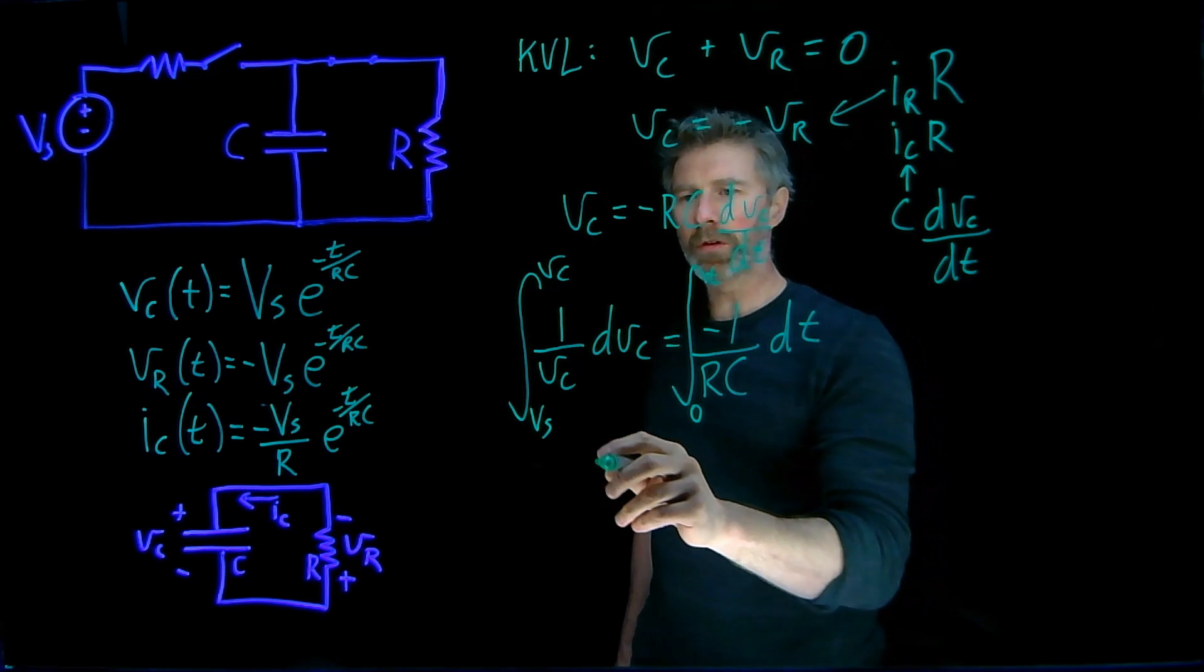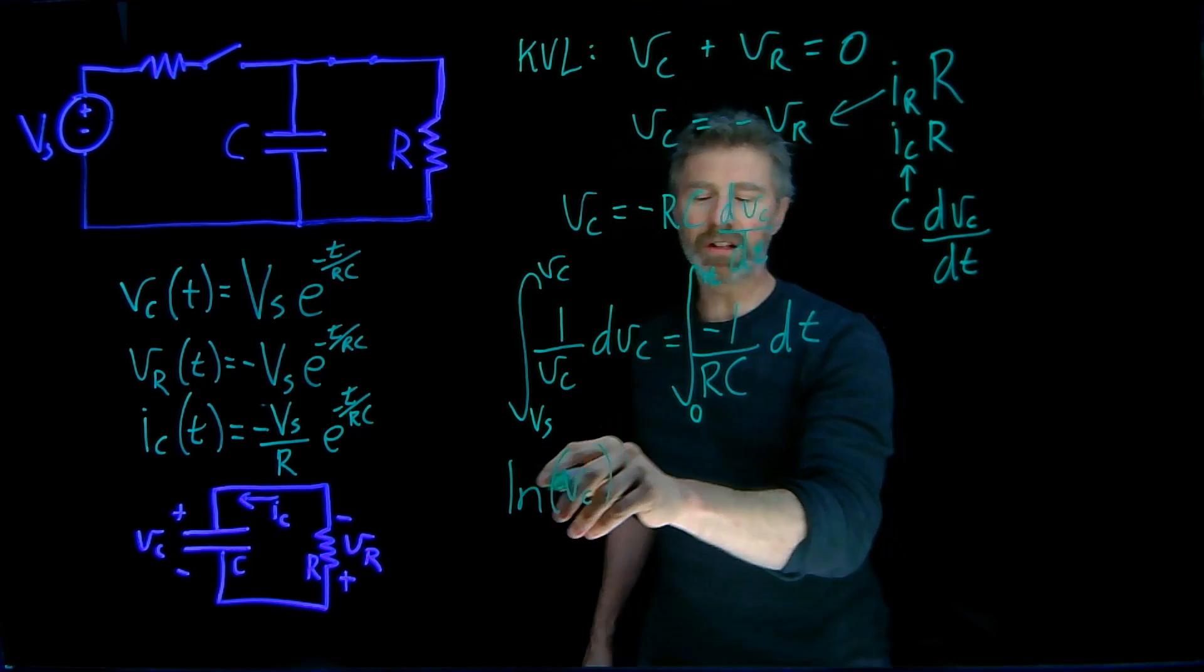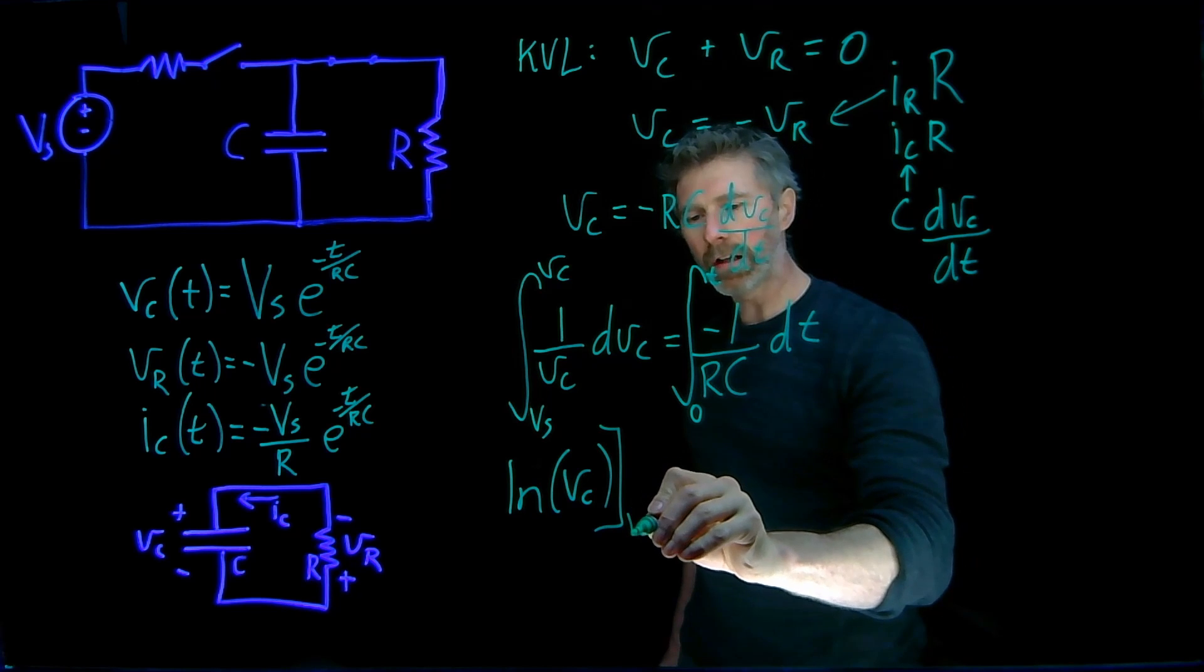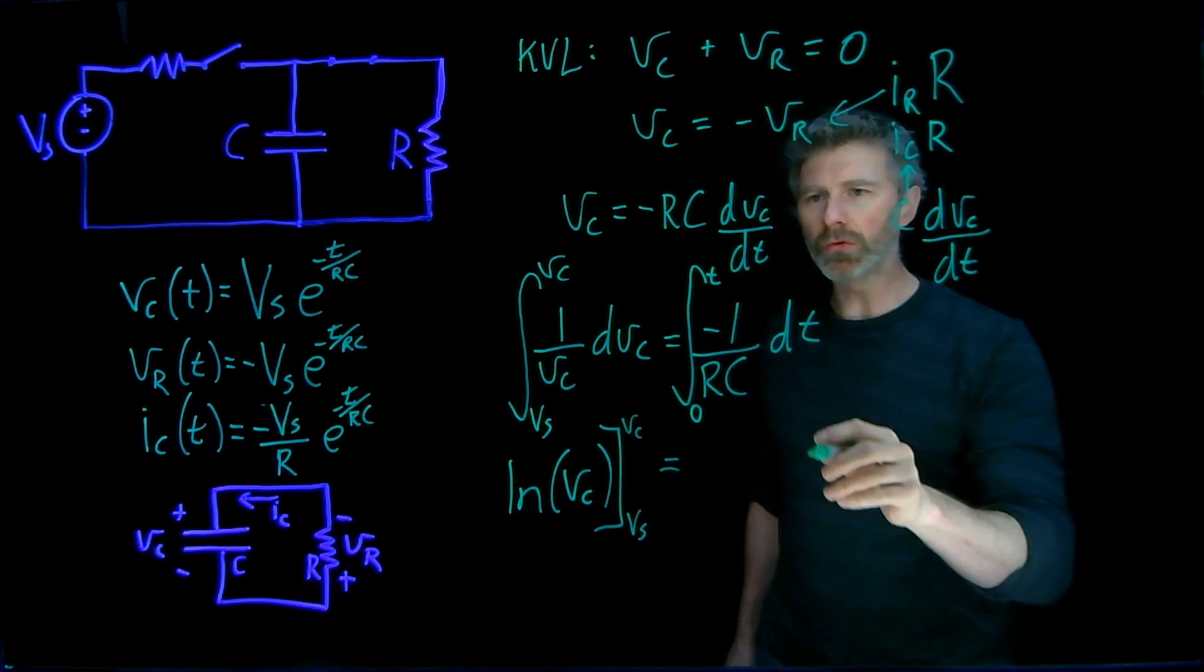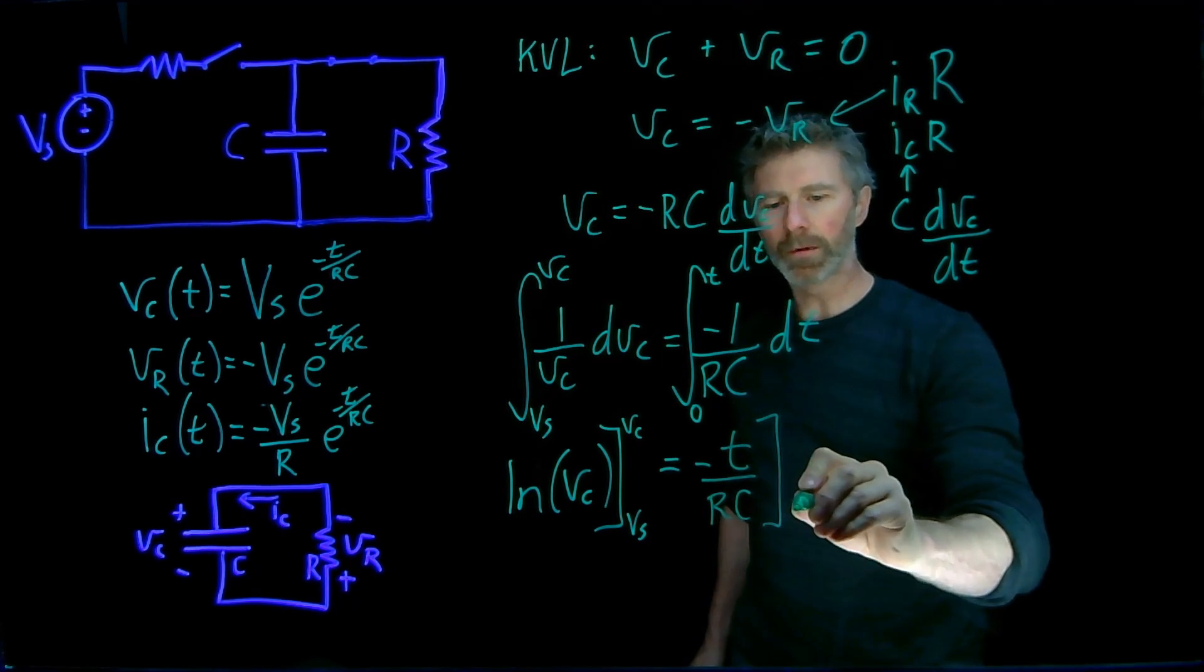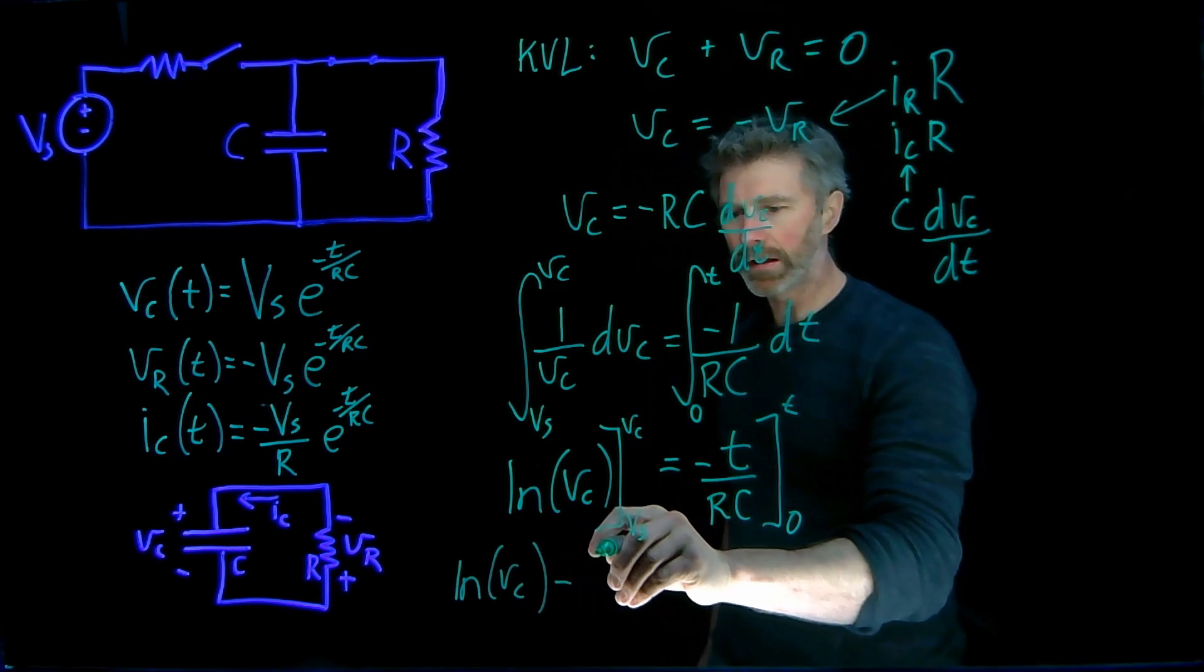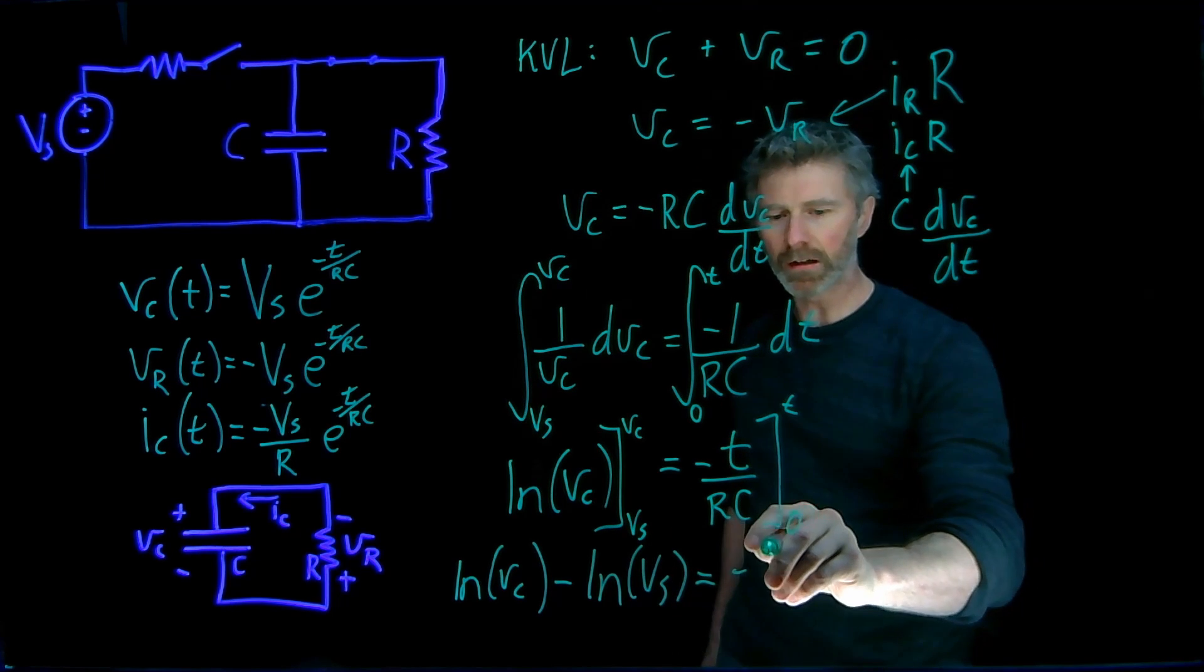The integral of one over VC with respect to VC is log of VC. Actually, it should be the absolute value, but VC is never going to be negative anyway. It's physically not going to be able to go negative. And we are integrating from VS to VC. And this is going to be equal to negative T over RC. So expanding this out, we get log of VC minus log of VS. And expanding this out, we simply get negative T over RC.